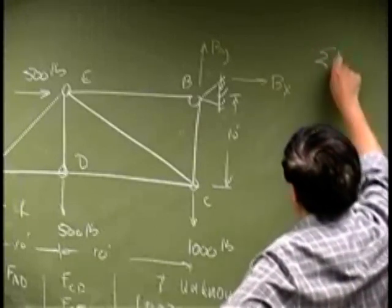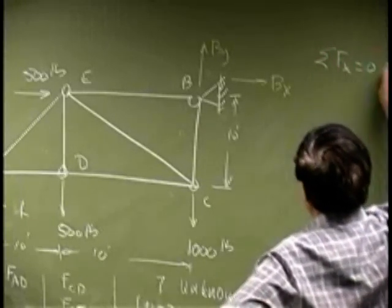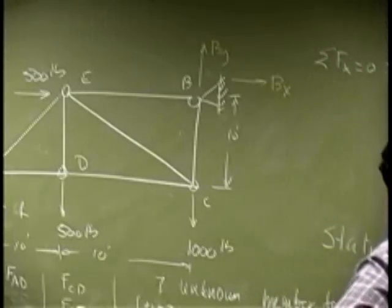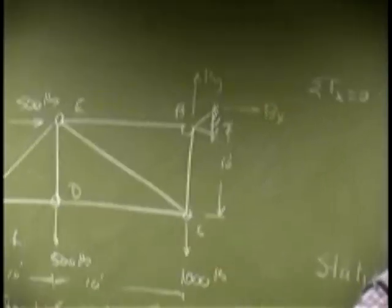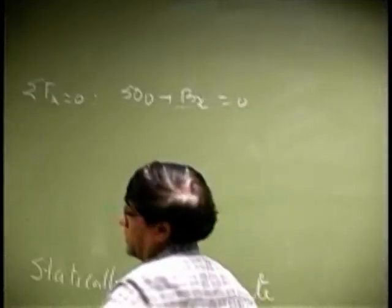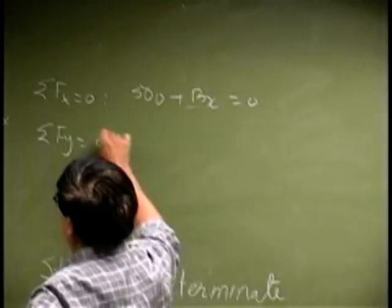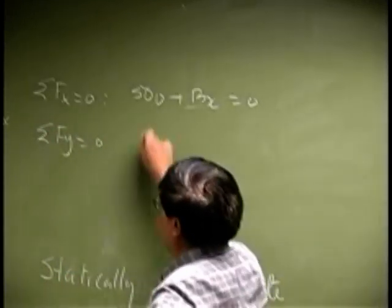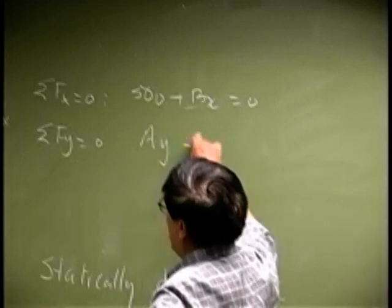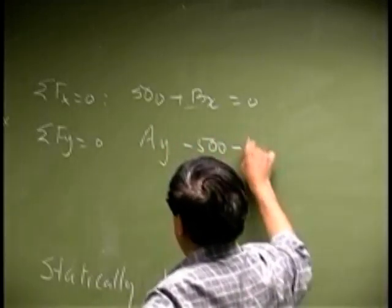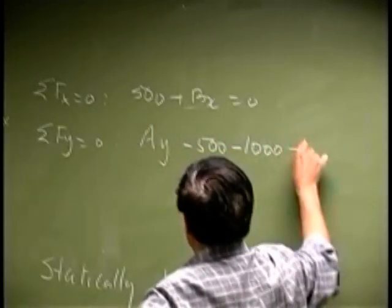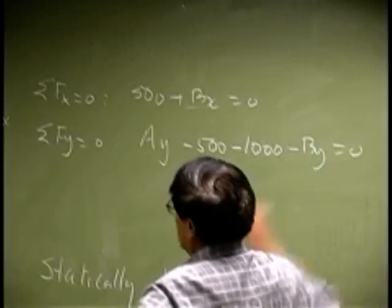Then we sum the force in x. That should go to zero. That gives you 500 plus Bx, that is zero. That is one equation. Then we sum the force in y direction to be zero. You get Ay minus 500 minus 1000 minus By equals zero.